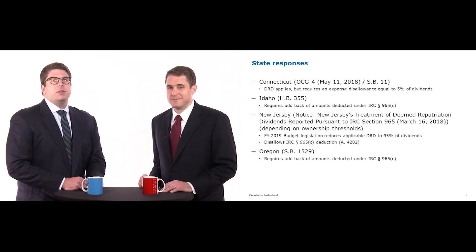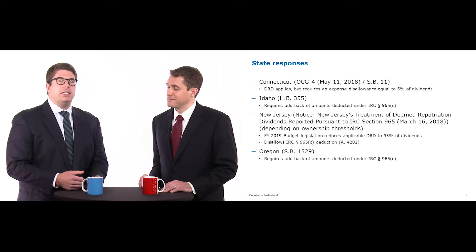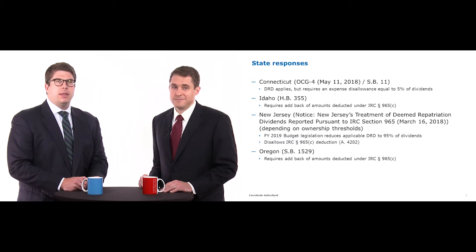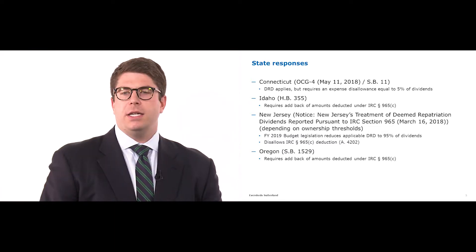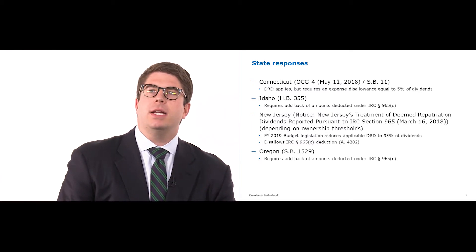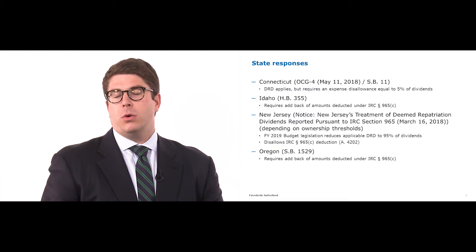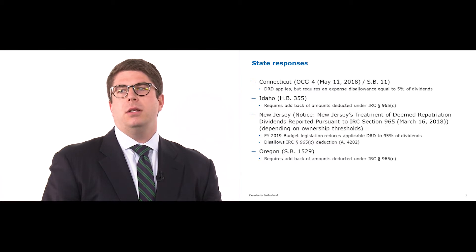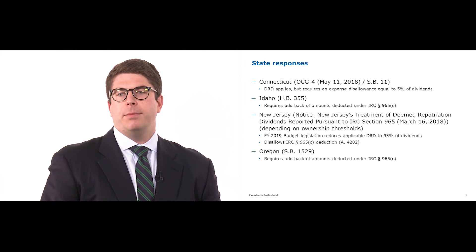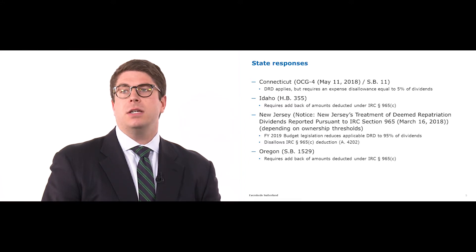Moving into some specific state examples — while we can't cover all states, we highlighted some of the major ones. The big focus of a group of states is that deduction that Aaron discussed in order to get to the effective tax rate under 965. Connecticut, Idaho, New Jersey, and Oregon, for example, all require an add-back of the amount deducted under 965. Each state then has varying guidance on whether or not their subpart F income subtraction modification or other DRD applies to such dividends.